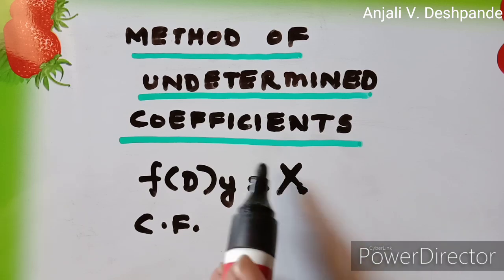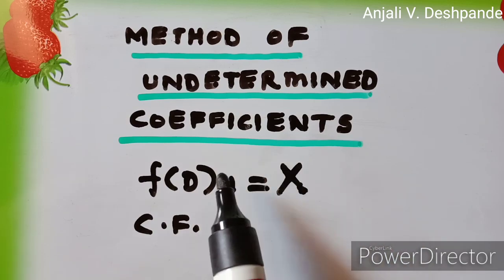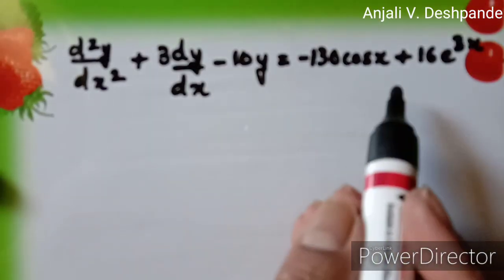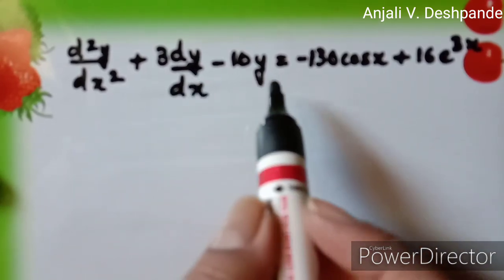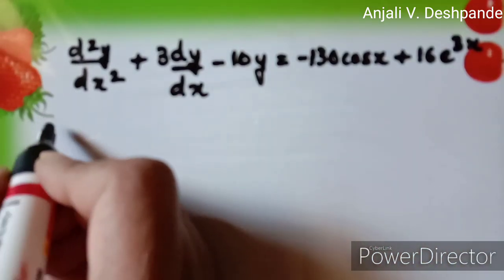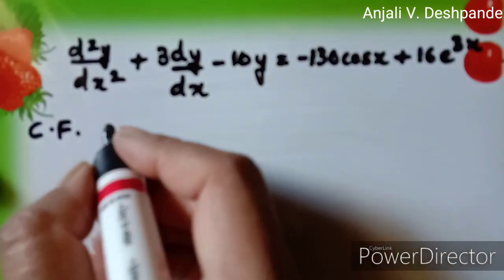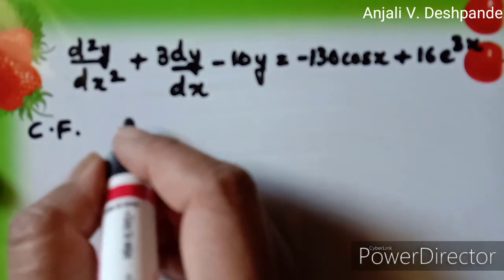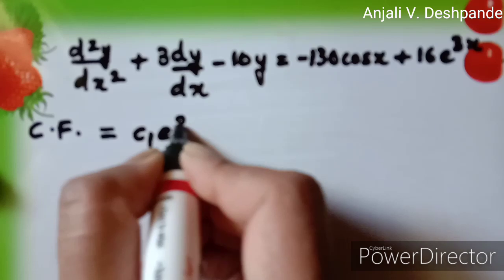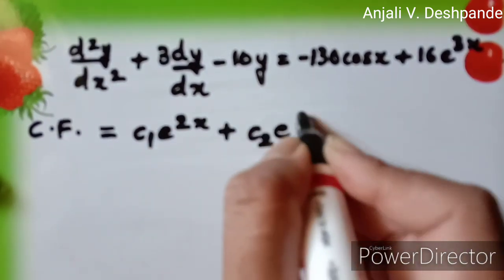Now we will see how to use the method of undetermined coefficients by means of an example. This is the non-homogeneous linear differential equation given to us. As per the methods discussed in the earlier video, first of all, we will find the CF. The CF in this case is equal to C1 e raised to 2x plus C2 e raised to minus 5x.